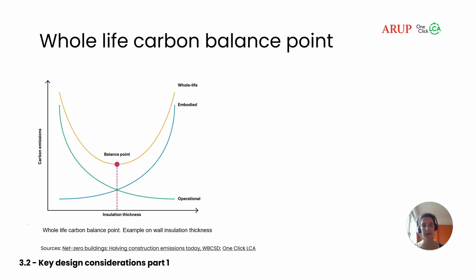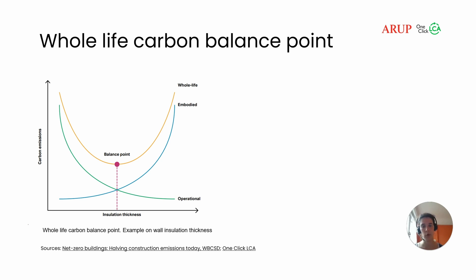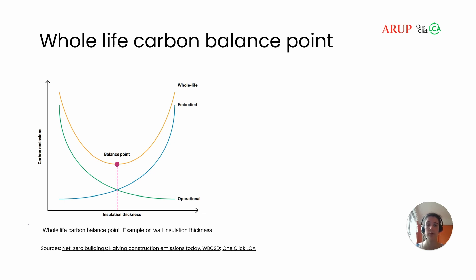Whole life carbon optioneering is particularly important for building services systems because there can be a tension between operational and embodied carbon, both of which are the responsibility of building services engineers. Certain interventions have the potential to reduce our operational carbon at the cost of increasing embodied carbon. For these types of measures, whole life carbon optioneering helps us to find the balance point and make sure that we aren't spending more embodied carbon than we are saving operationally, and that therefore we're minimizing whole life carbon emissions.